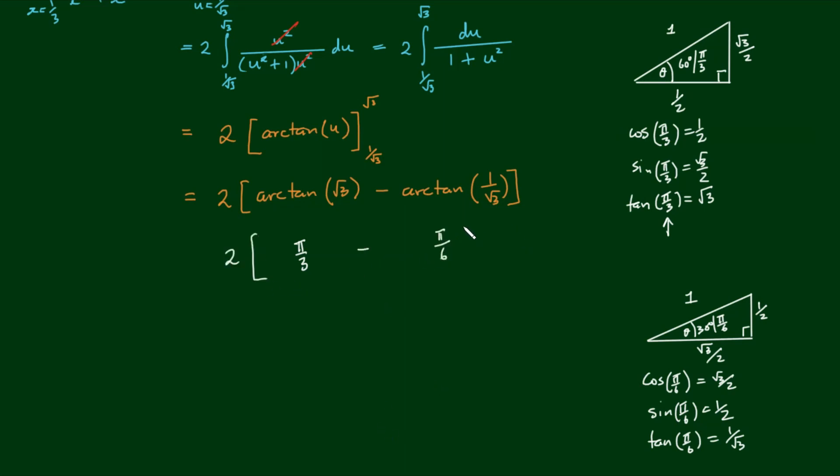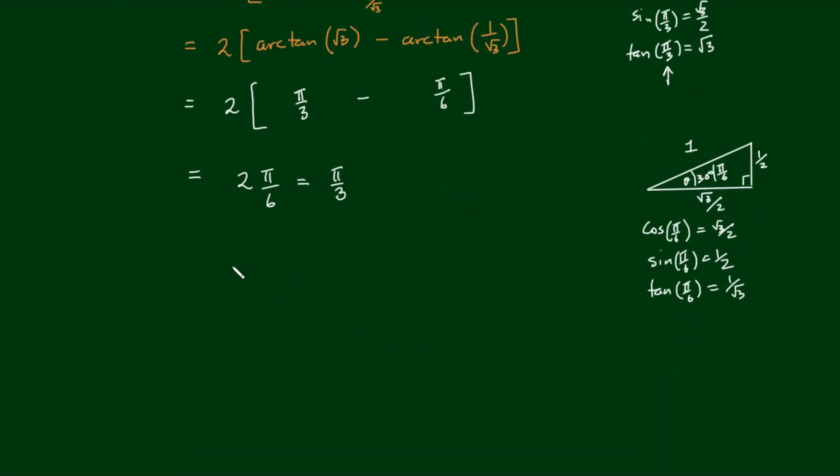So we have two by pi on three minus pi on six, which is equal to two by pi on six, which is equal to pi on three. So we found that the integral from x equals one-third to x equals three of the root of x to x squared plus x dx is equal to pi on three, which is a pretty cool and fascinating result.